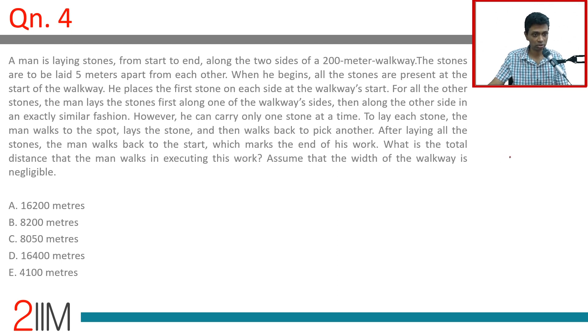To lay each stone, the man walks to the spot, lays the stone, then walks back to pick the next one. After laying all the stones, the man walks back to the start, which marks the end of his work. What is the total distance that the man walks in executing his work?